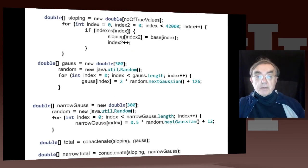And here we have all these same, exactly the same arrays, the sloping array, the gauss array, the narrow gauss array, and the total. And here we have these two totals.